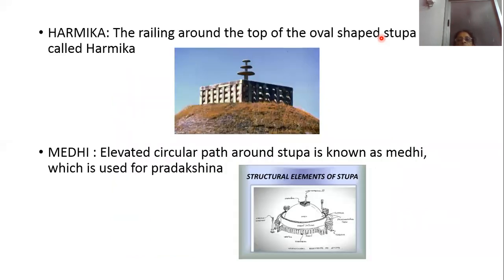The linear sketch of the Stupa shows its different parts. The first part is Harmika: the railing around the top of the oval-shaped Stupa is called Harmika.